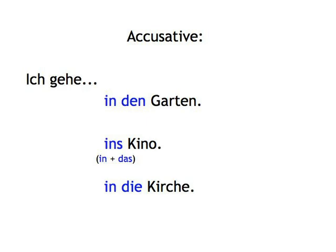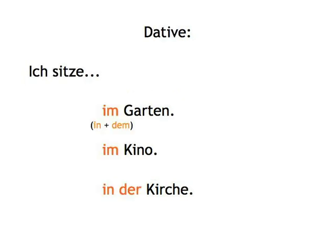In the dative, to show location. Ich sitze im Garten — I'm sitting in the garden. Ich sitze im Kino — I'm sitting in the cinema. Ich sitze in der Kirche — I'm sitting in the church.